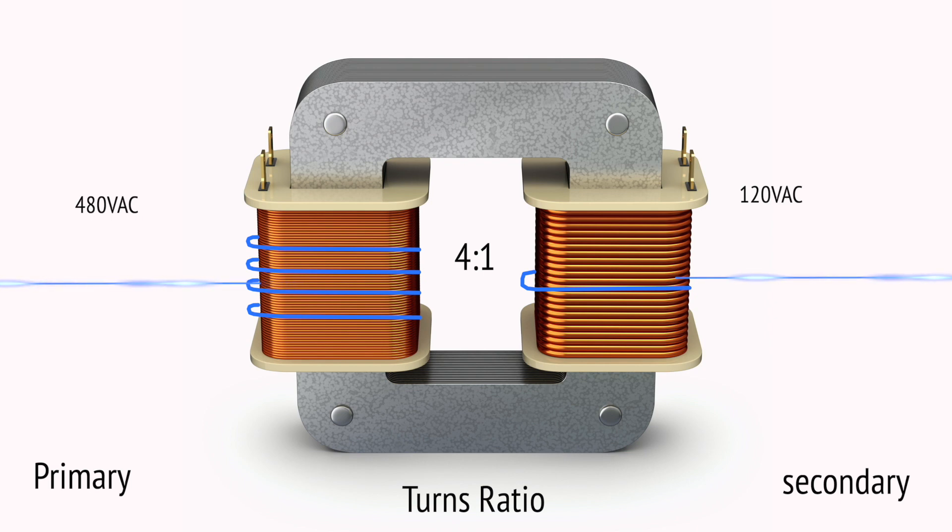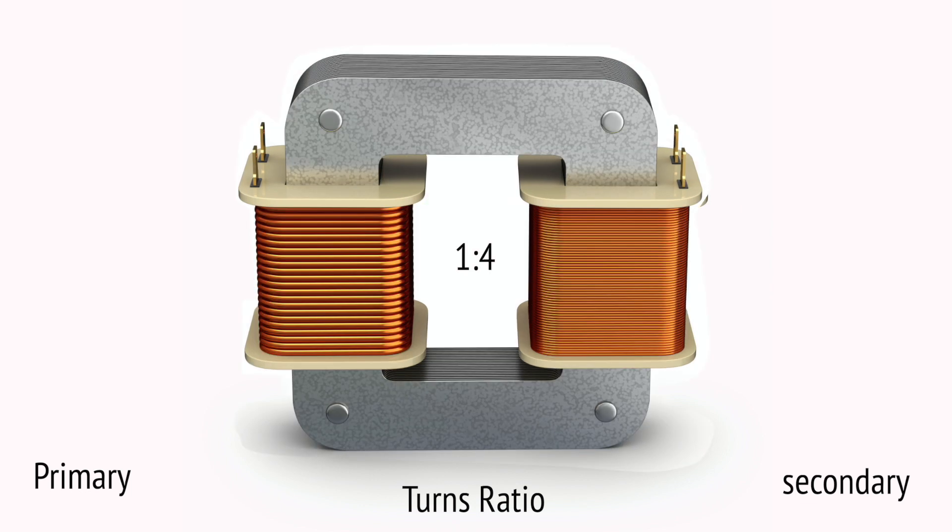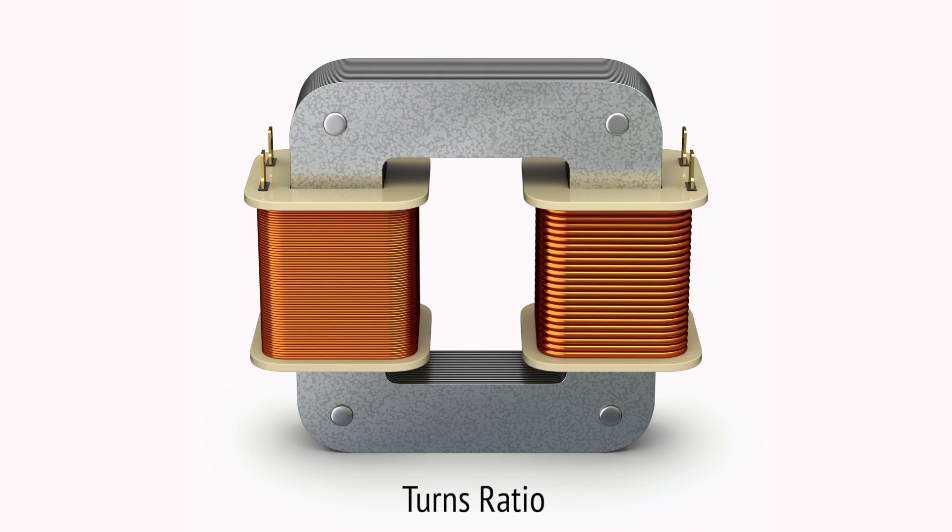The exact opposite is true for a transformer with a 1 to 4 turns ratio. This transformer would have 1 turn on the primary for every 4 turns in the secondary. Inputting 120 volts AC to the primary winding will produce 480 volts AC at the secondary winding. The actual number of turns is not important, only the turns ratio.